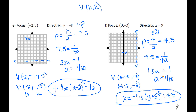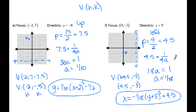Just a quick recap: to write the equations you need two pieces of information — h, k (the vertex) and the value of a. To solve for a, use p, because p equals 1 over 4a. Pay attention to the sign of a: if the parabola opens to the left or down, you must make a negative. Hope this video helps. See you in class.